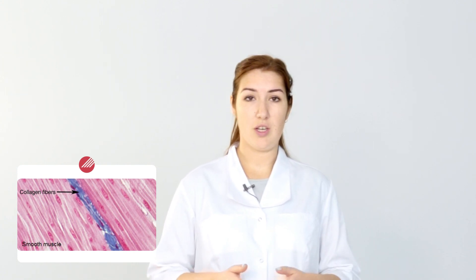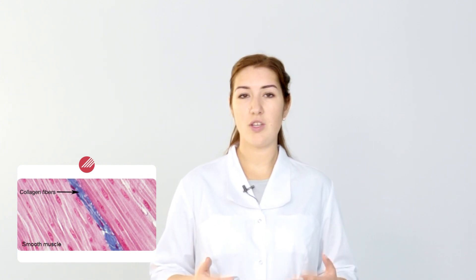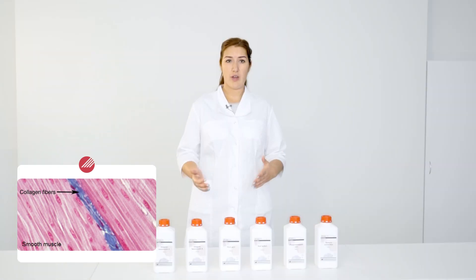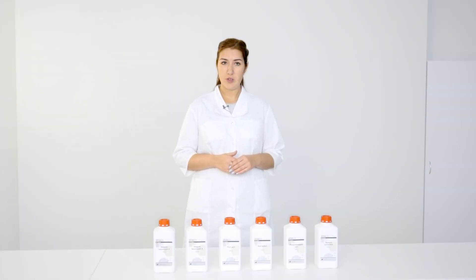Many techniques available for differential demonstration of the connective tissues fall into the category of trichrome stain. This is a histological staining method which uses two or more acid dyes in combination with a polyacid to differentially stain two basic materials in contrasting colors. The most common application is to stain muscle fibers in red and collagen fibers in green or blue. This is necessary since smooth muscle fibers may be difficult to differentiate from collagen.